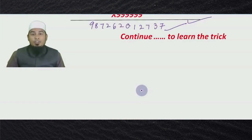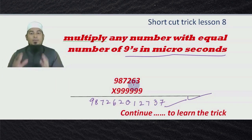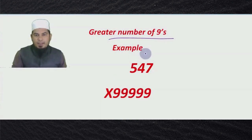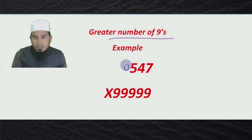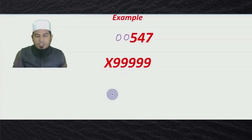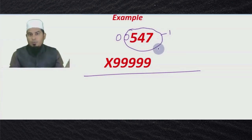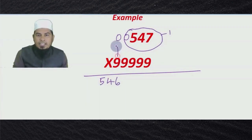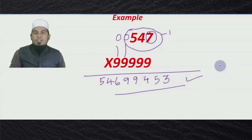The key rule is: the number of digits and the number of nines must be equal. Now, what happens when the number of nines is greater than the number of digits? Here I have taken an example where there are five nines but only a three-digit number. Just introduce zeros in front of that number so it becomes a five-digit number for our purpose. Then subtract this number by one — the whole technique works. Five, four, six — each digit subtracted from nine, and the last subtracted from ten, giving you the answer.